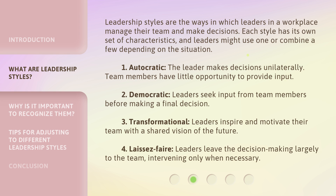There are four key leadership styles. First, Autocratic: the leader makes decisions unilaterally, and team members have little opportunity to provide input. Second, Democratic: leaders seek input from team members before making a final decision. Third, Transformational: leaders inspire and motivate their team with a shared vision of the future. Fourth, Laissez-faire: leaders leave the decision-making largely to the team, intervening only when necessary.